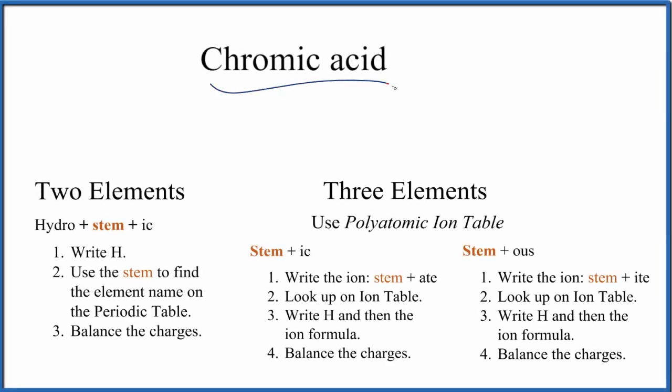Let's write the formula for chromic acid. Since we have an acid here, we're going to have H at the front of the formula. Next, when we look at the name, there's no prefix in front of chromic acid. We don't have hydro, so since there's no hydro, we know it's going to be more than two elements.